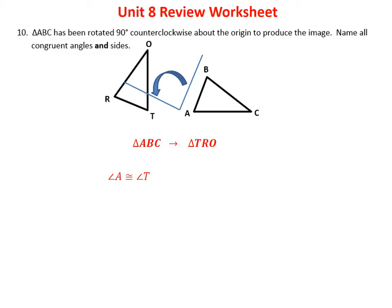Angle A matches angle T — they're both the first letter in their respective triangles. B becomes R and C becomes O. Then for segments: AB corresponds to TR, BC to RO, and CA to OT. If you set up that first mapping statement — triangle ABC maps onto triangle TRO — you can answer all six congruence relationships just from that diagram.